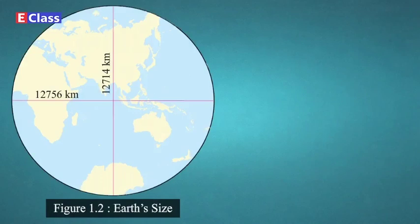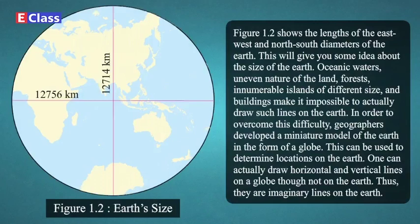Explanation — Figure 1.2: Earth's Size. Figure 1.2 shows the lengths of the east-west and north-south diameters of the earth, giving some idea about the size of the earth. Oceanic waters, uneven nature of the land, forests, innumerable islands of different sizes, and buildings make it impossible to actually draw such lines on the earth. In order to overcome this difficulty, geographers developed a miniature model of the earth in the form of a globe, which can be used to determine locations on the earth.